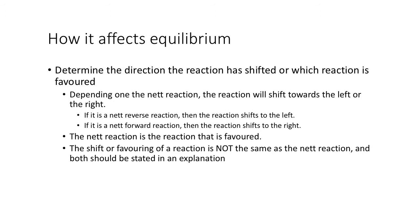You use the net reaction to work out which way the reaction has shifted. If it's the net reverse rate of reaction, the reaction shifts to the left. If it's a net forward reaction, it shifts to the right. The net reaction is the reaction that is favoured. However, in your explanation you can't just say it shifted to the left without stating that there is a net reverse rate of reaction — that's not going to be enough in your explanation.